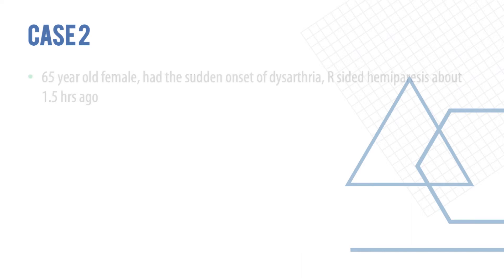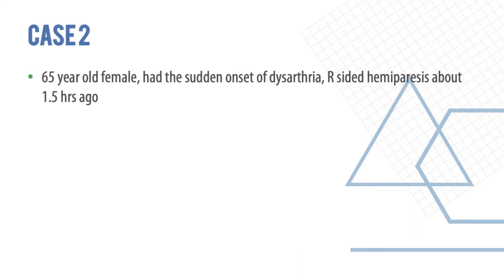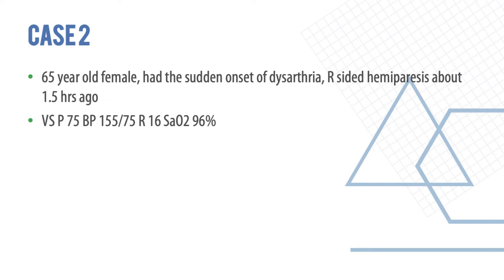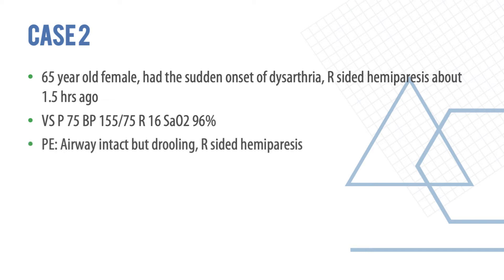Similarly, there's a 65-year-old lady with sudden onset of dysarthria and hemiparesis. Vital signs include pulse 75, blood pressure 155/75, saturation 96%. On examination, airways are intact but the patient has drooling and right-sided hemiparesis.